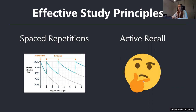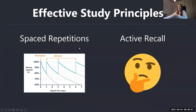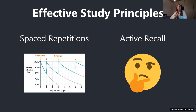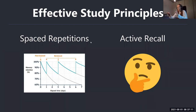Now the two main effective study principles I take into consideration when designing my study method. First, spaced repetition — I'm sure most of you are somewhat familiar with this. It's a way to review content on a regular basis instead of cramming at the end. As you can see from this graph, you repeat stuff at increasingly large intervals: a day after you first see the material, then two to three days, then a week, then two weeks — this way you retain information long-term without cramming.